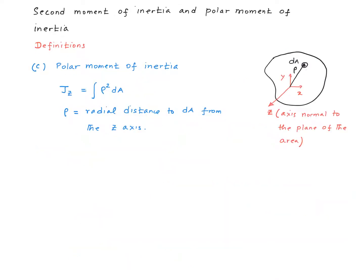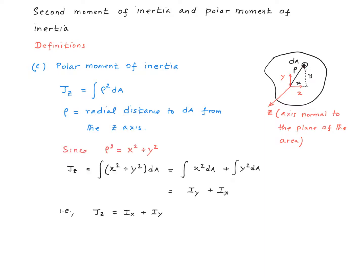Now the definition of the polar moment of inertia. The polar moment of inertia, Jz, is defined just like the second moment of area, but instead of using x or y in the expression, we use rho. Rho is the radial distance from the z-axis to the point where dA is defined. Note that z is the axis perpendicular to the x-y plane — in other words, the axis perpendicular to the plane of this area. Considering the right triangle, rho squared equals x squared plus y squared. Using this expression and simplifying, we see that Jz is also equal to Ix plus Iy.